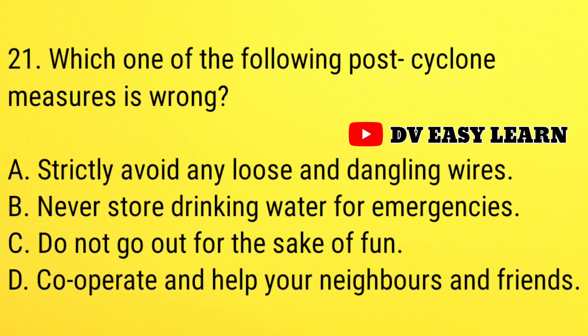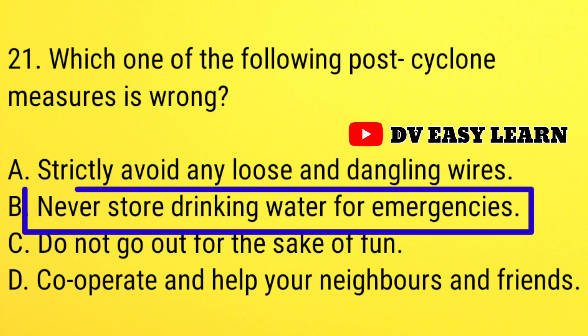Question number 21: which one of the following forced cyclone measures is wrong? Correct option: never store drinking water for emergencies.